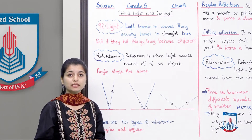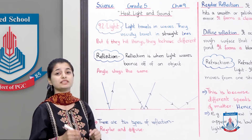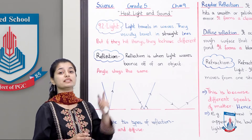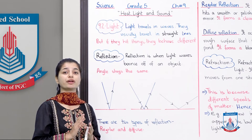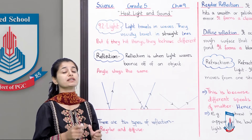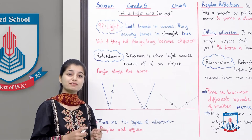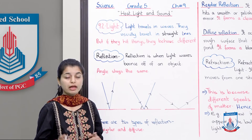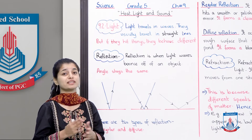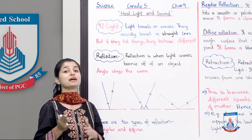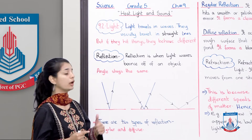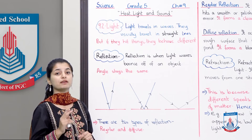All they are trying to explain is that light will reflect at the angle at which it hits the object. To summarize: light behaves differently when it hits an object. If no object is present, it moves in waves. But when an object is present, it changes its path and behaves in three different ways. The first one is reflection.